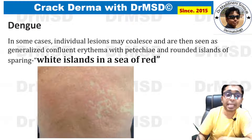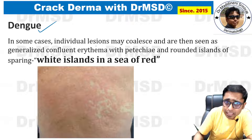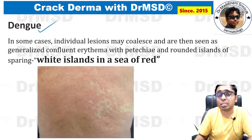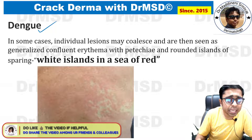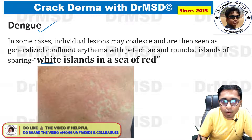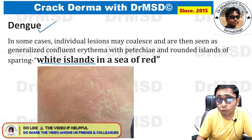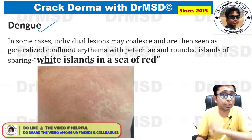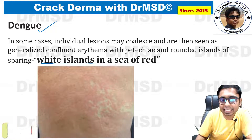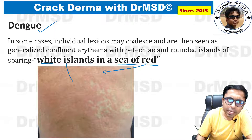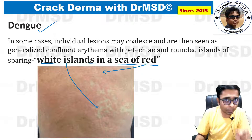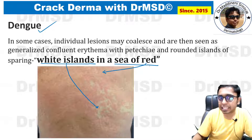One more very important point regarding dengue: a maculopapular rash is seen, no doubt, but there is one very characteristic finding — certain areas of sparing of this maculopapular rash over the body. These are called white islands in a sea of red. The entire body is erythematous except for a few spared areas without the maculopapular rash.